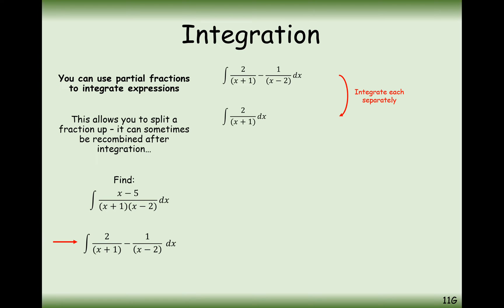We're going to integrate the terms separately. In the first case we want a 1 on the top because (x plus 1) will differentiate to 1. However, you can't just change the 2 to a 1 — let's factor out the 2 to the front. The integral becomes 2 ln(x plus 1). The 2 can always be incorporated inside the ln as a power, so it's ln(x plus 1) all squared.